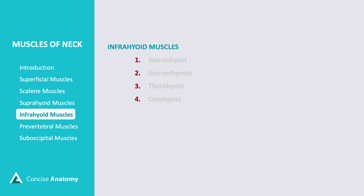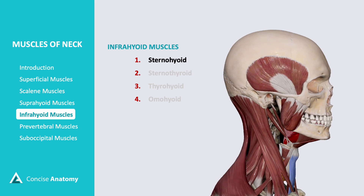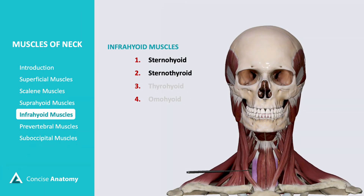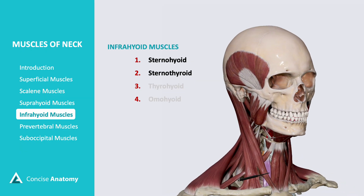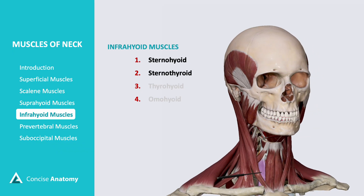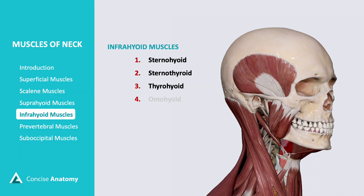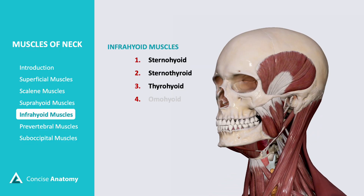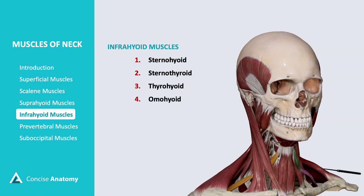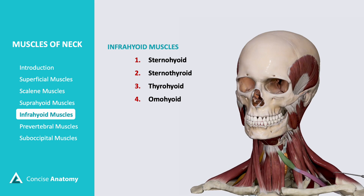The infrahyoid muscles, also known as the strap muscles, are located below the hyoid bone and include four paired muscles. Sternohyoid extends from the sternum to the hyoid bone, helping to depress the hyoid after swallowing. Sternothyroid runs from the sternum to the thyroid cartilage, aiding in lowering the larynx during speech and swallowing. Thyrohyoid connects the thyroid cartilage to the hyoid bone, assisting in depressing the hyoid or elevating the larynx. Omohyoid is a two-bellied muscle with an intermediate tendon, stretching from the scapula to the hyoid, helping to depress and stabilize the hyoid.